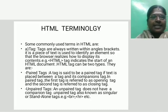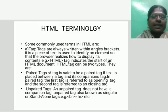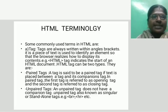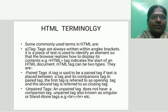HTML tags indicate the start of an HTML document. HTML tags can be of two types: paired tags and unpaired tags. A tag is said to be a paired tag if text is placed between a tag and its companion tag. In paired tags, the first tag is referred to as the opening tag and the second tag is referred to as the closing tag.